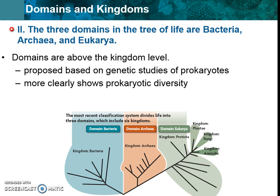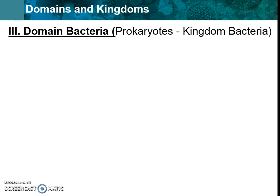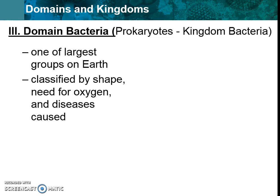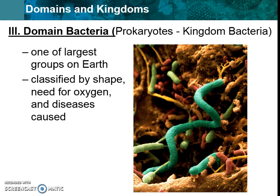We're going to go over each of these bigger domains, and then later we'll learn about each of the kingdoms in more detail. So let's jump into the domain Bacteria. This is our more common bacteria. We know that bacteria are prokaryotes — meaning they have no nucleus. They're one of our largest categories on Earth. They're classified by their shape, whether or not they are anaerobic or aerobic, and what diseases they cause. Some are spirals, some are circles, some are rod-shaped. Do know that bacteria are different than viruses, and we're going to talk about viruses very soon.